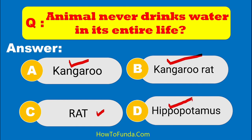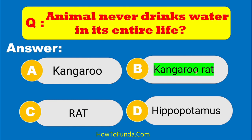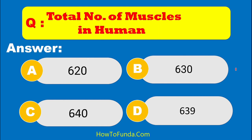Which animal never drinks water in its entire life? The kangaroo rat is the animal which never drinks water in its entire life. Total, how many muscles are in the human body — is it 620, 630, 640, or 639?